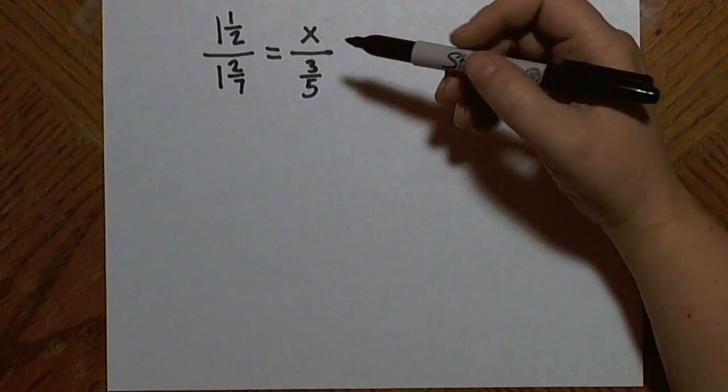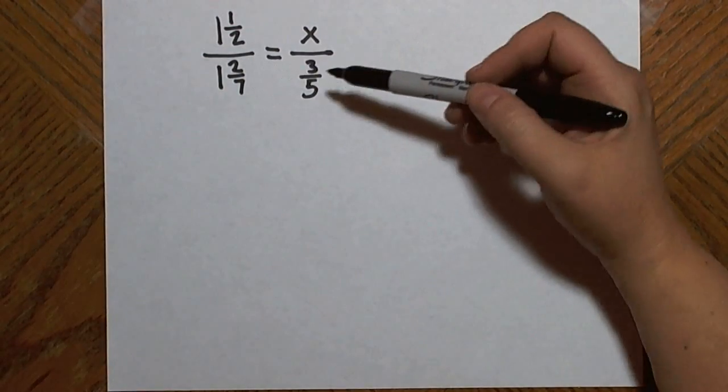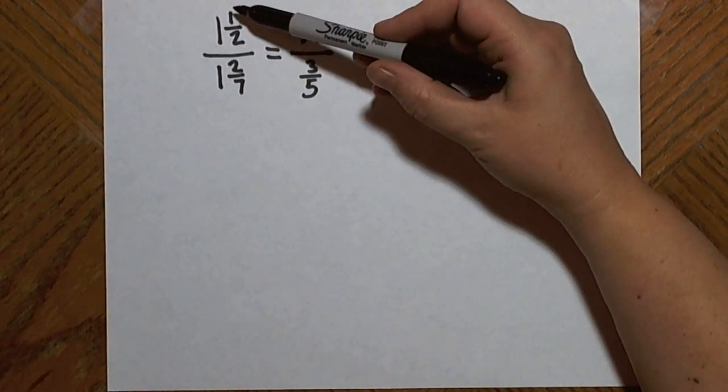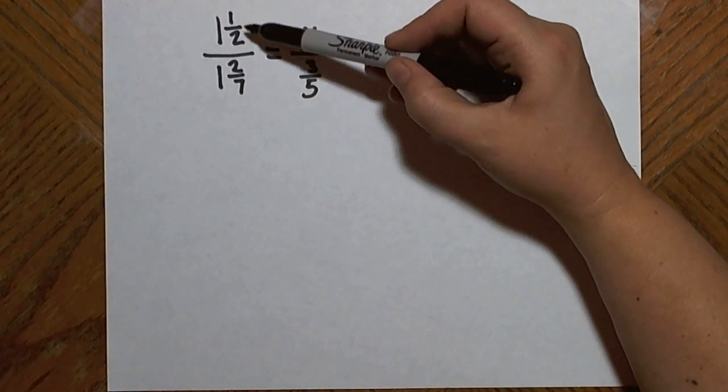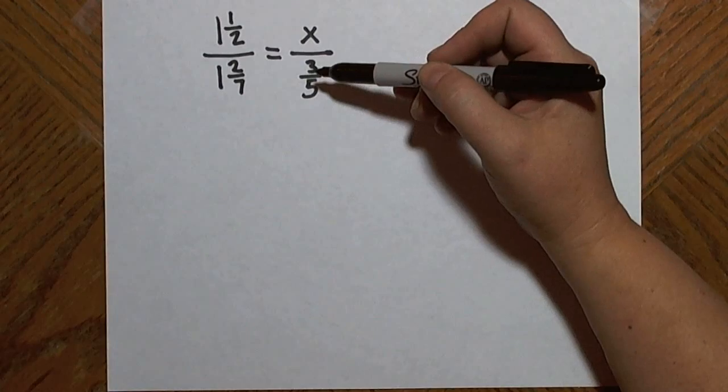In this problem, I'm going to find the value of x that will make the two sides of this equation equal. It's a proportion where I have one fraction equal another fraction. So I'm going to find the value that makes it a true proportion.